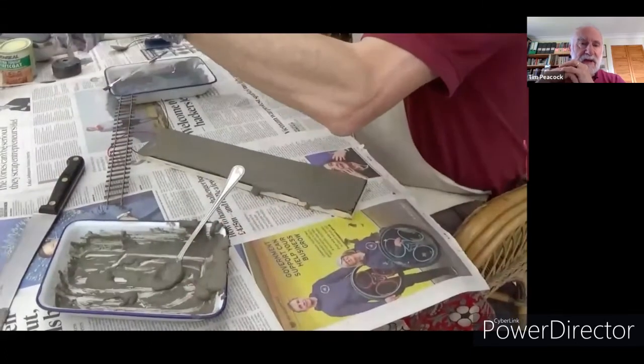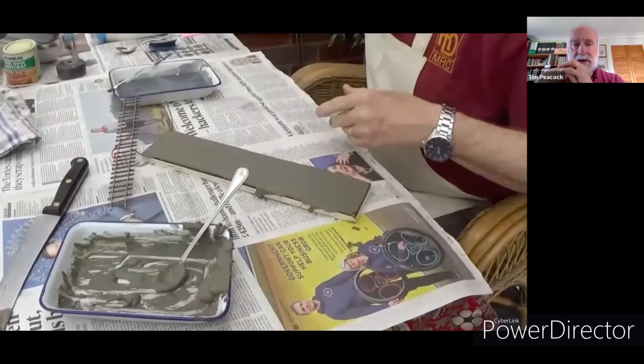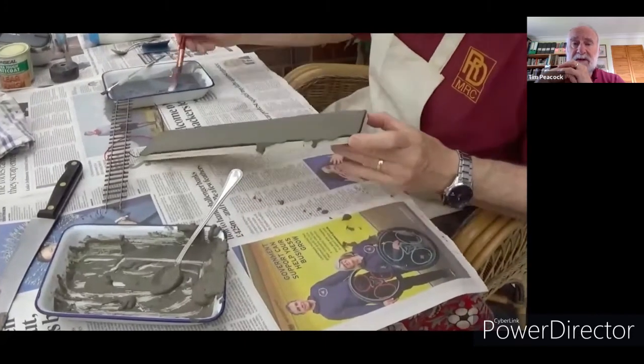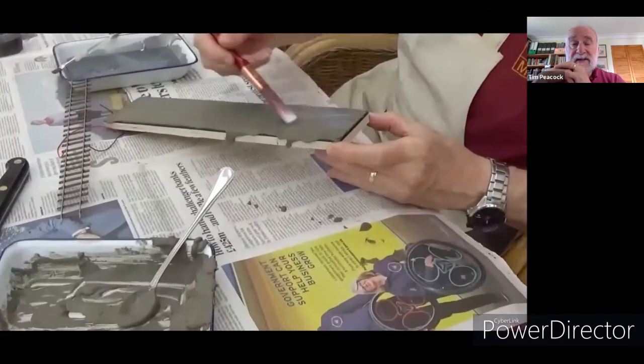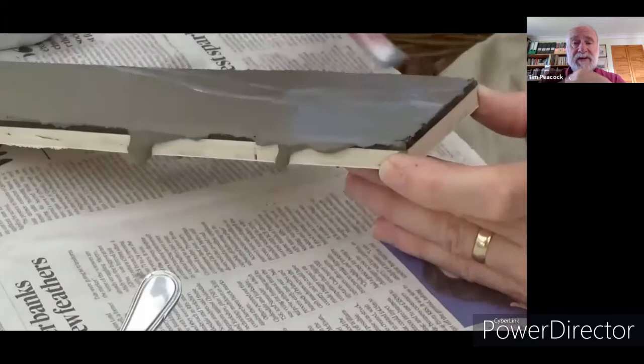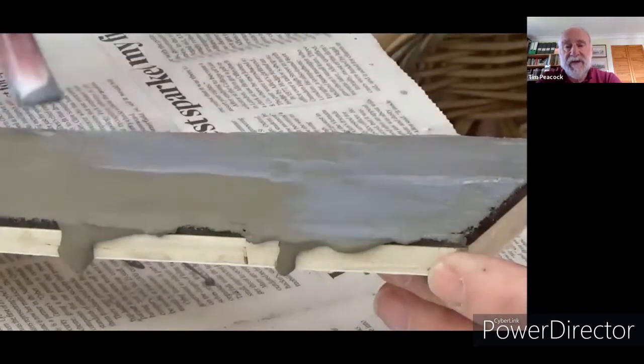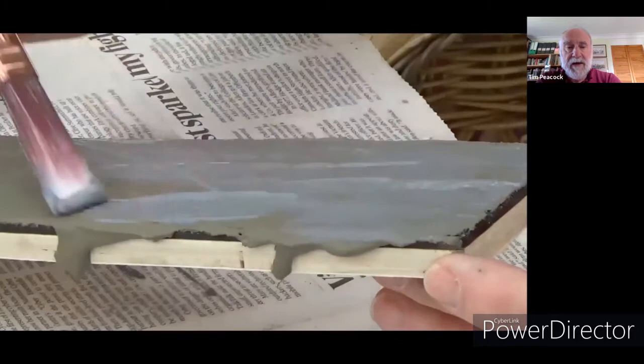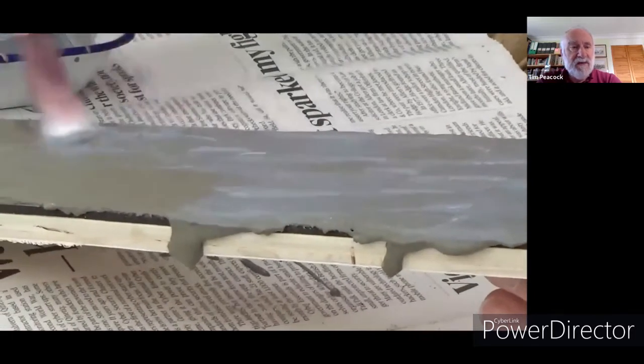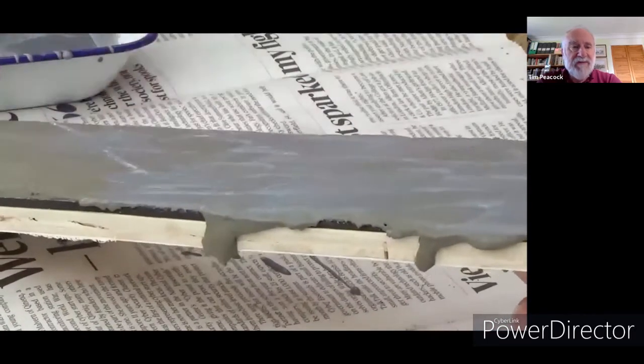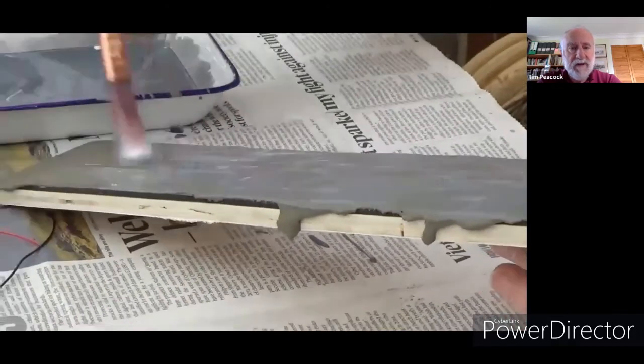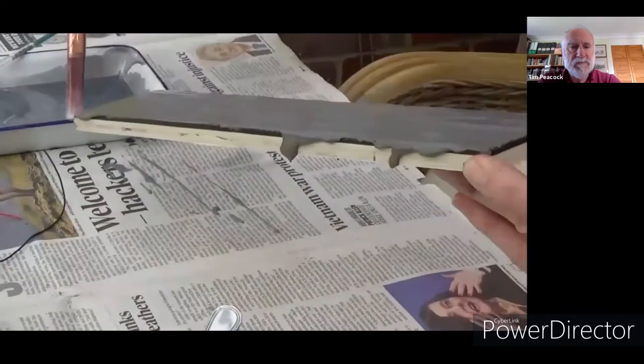And the next key bit is to then put a layer of PVA on top. So this is the dilute PVA we used before with a bit of powder paint in it, black powder paint. This is important and is there because the tile adhesive on its own will not grab the ballast. It's not sticky enough. Very good at grabbing the track. And once it's gone rock hard, it's bulletproof almost. But it's not sticky enough to grab the ballast. So we found that by putting a thin layer of sort of slurry of PVA on top, that solves the problem. Let's do that.